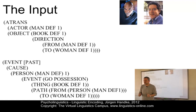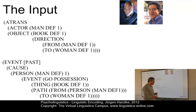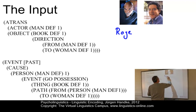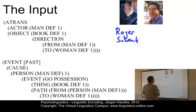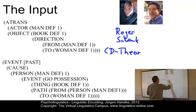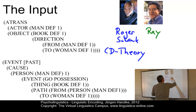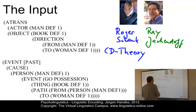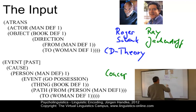Normally, such representations are given in English as a meta-language. Here are two conceptual representations for the same sentence. The first one goes back to Roger Shank and was developed in the context of conceptual dependency theory, or CD theory. The second one goes back to Ray Jackendoff and was developed in the context of his so-called conceptual grammar.